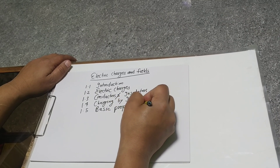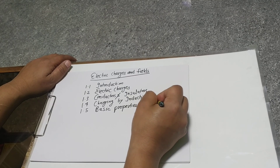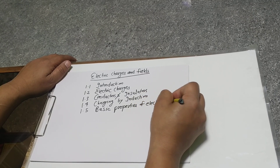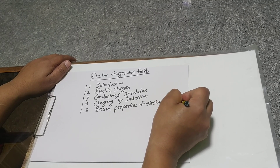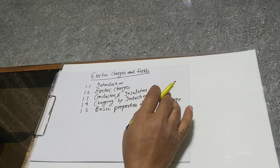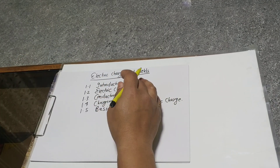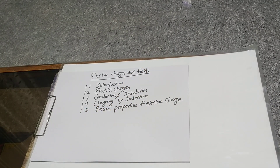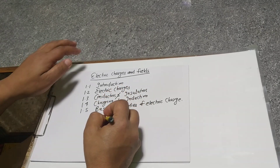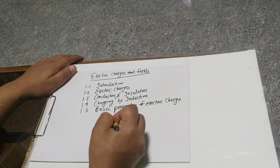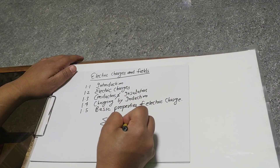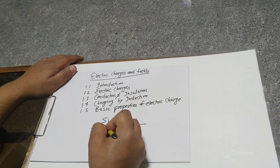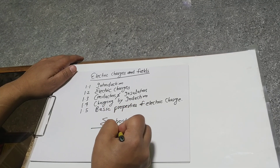So we will discuss today these topics: basic properties of electric charge. First of all we'll discuss the introduction. The introduction, in other words, is electrostatics. When we talk about electrostatics, it is simply: electron plus static.